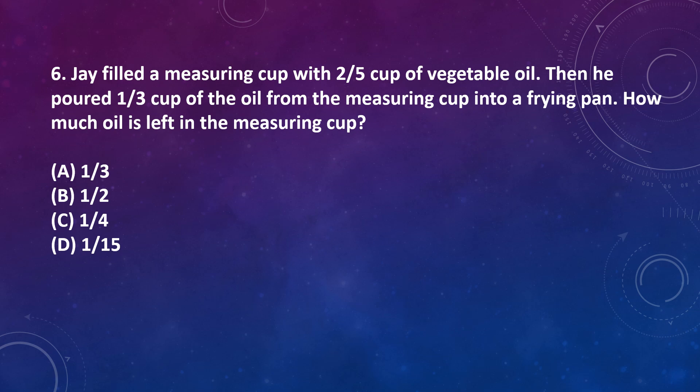Jeff filled measuring cup with 2 by 5 cup of vegetable oil, then he poured 1 by 3 cup of oil from the measuring cup into the frying pan. That means he removed 1 by 3 from 2 by 5. So 2 by 5 minus 1 by 3, we take LCM 15, 6 minus 5 equals 1 by 15. Correct answer is option D, 1 by 15.